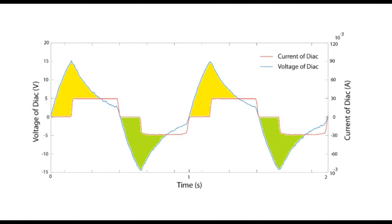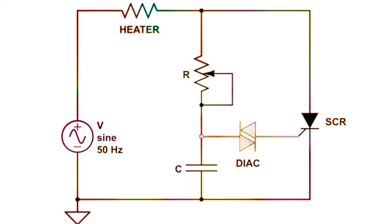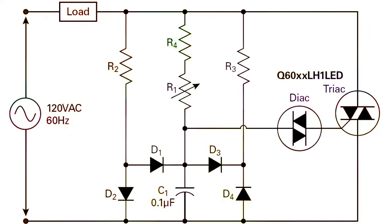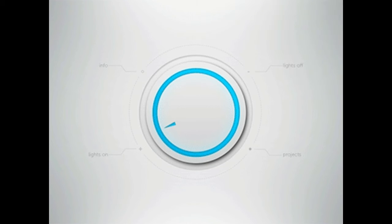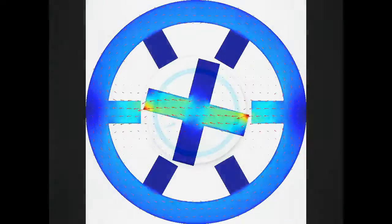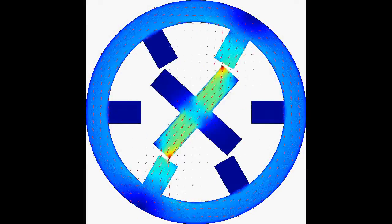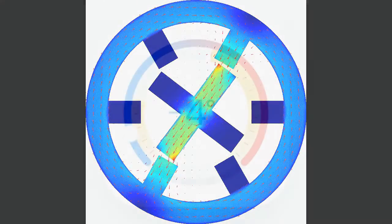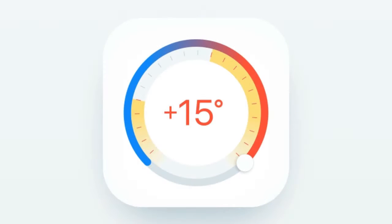DIACs are used to drive other semiconductor switching components, especially triacs and thyristors. Triacs have many applications such as dimmers, heaters, and motor speed controllers. In these cases, DIACs are used in combination with triacs to provide full-wave control of the AC source.